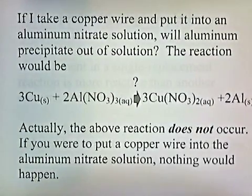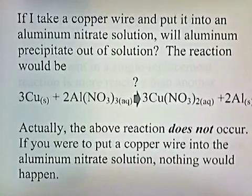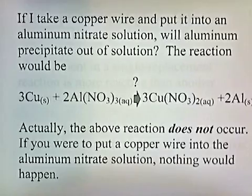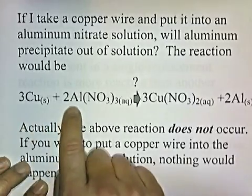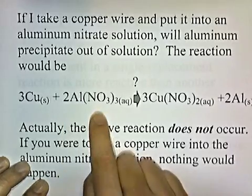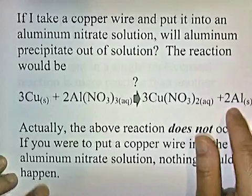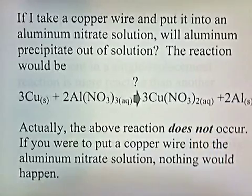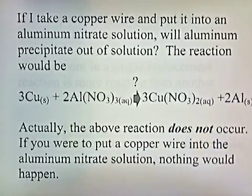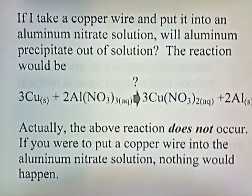If I take a copper wire and put it into an aluminum nitrate solution, will aluminum precipitate out of solution? The reaction would be copper wire placed into an aluminum nitrate solution, and we think we might get copper nitrate and solid aluminum precipitating out. Well, actually the above reaction does not occur. If you were to put a copper wire into the aluminum nitrate solution, nothing would happen.